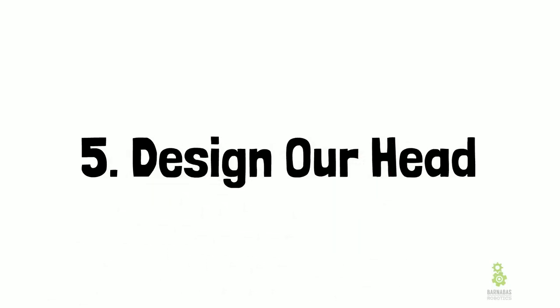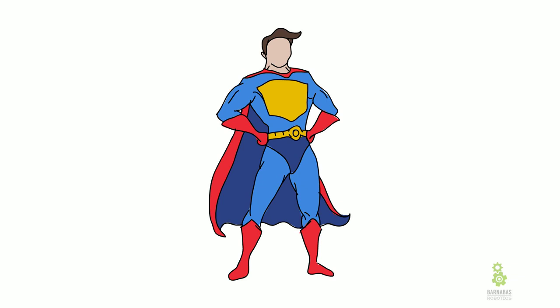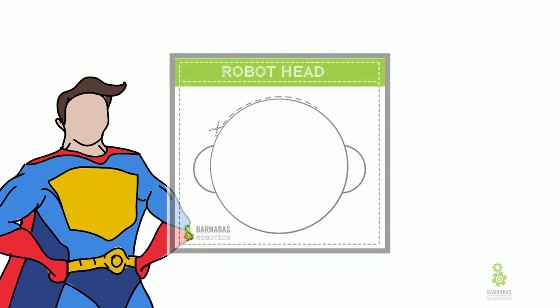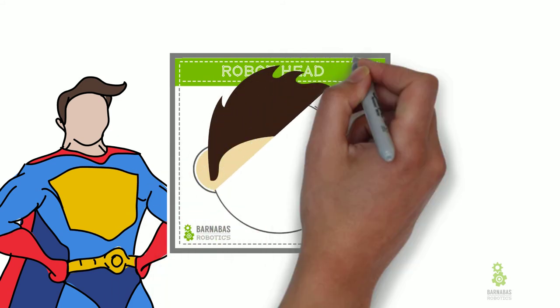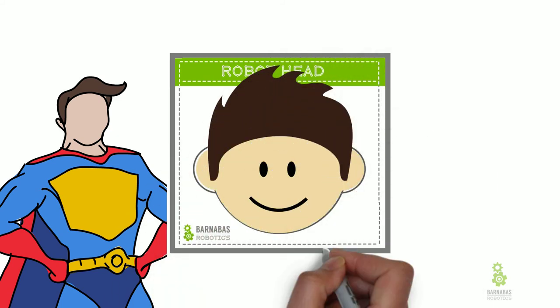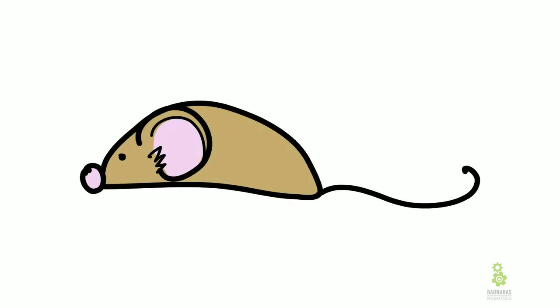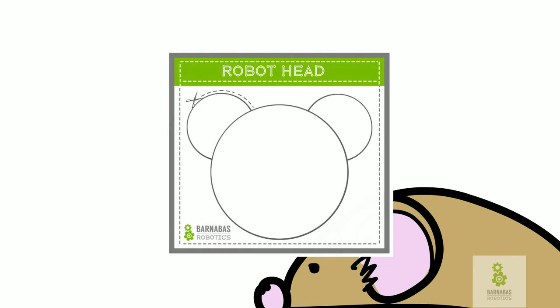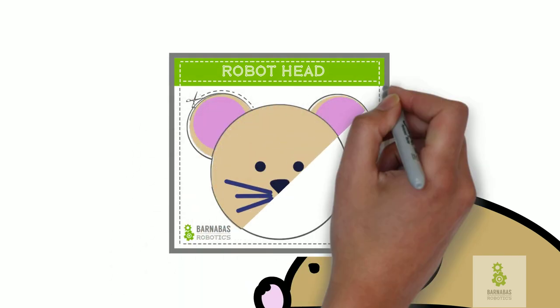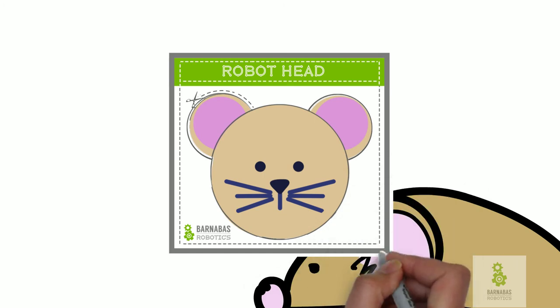So now let's design our head. If I was doing the superhero, I'm going to get the human head and I'm going to color it — I've got some nice hair and a smiley face. My superhero is smiling. And if I'm doing the mouse, I get the animal head and draw the mouse — I've got some ears and eyes, and a whisker. A mouse has got to have whiskers, right?